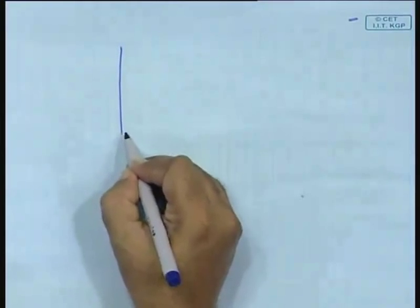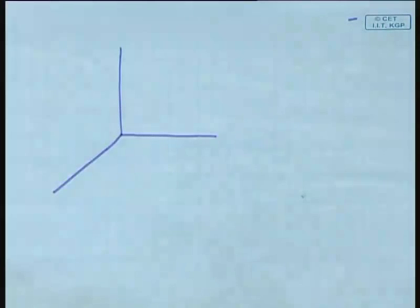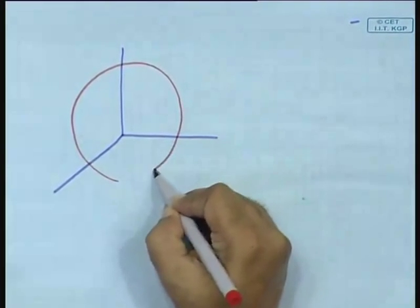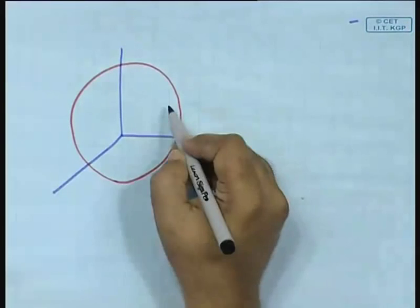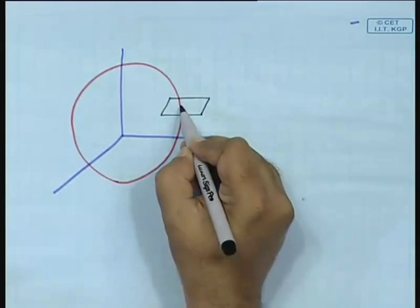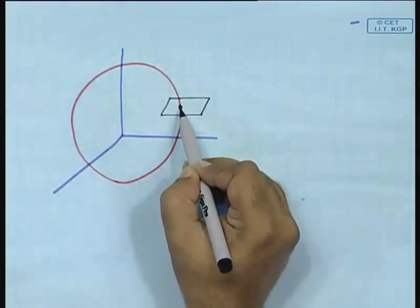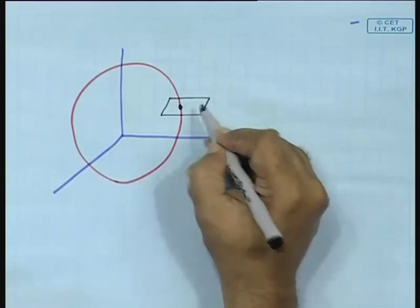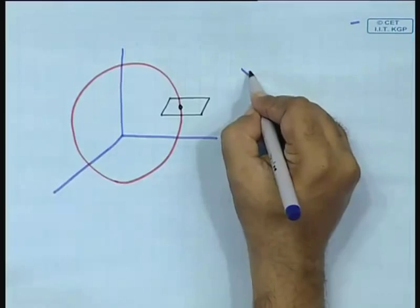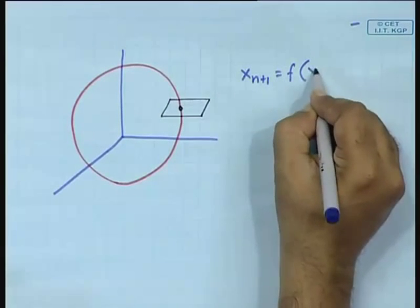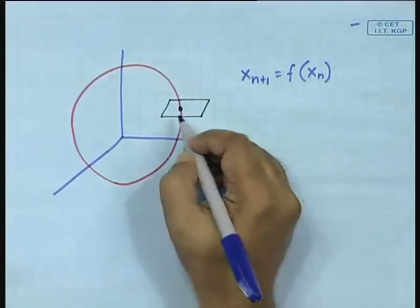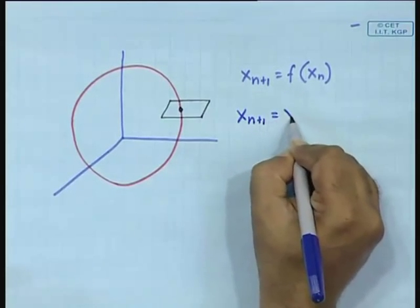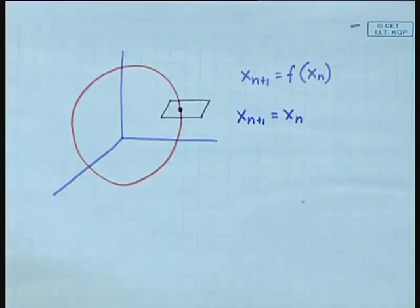In the last class we saw that if you have a periodic orbit, a limit cycle, then in order to study its stability, we obtain a Poincaré section where it appears as just one point. On the Poincaré section it is defined as a map x_{n+1} = f(x_n), and this specific point has the property that x_{n+1} = x_n — it is a fixed point.